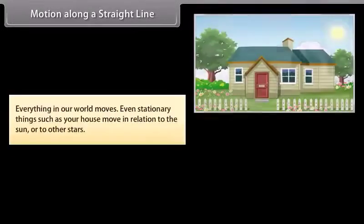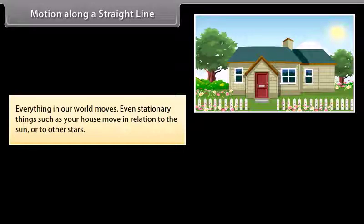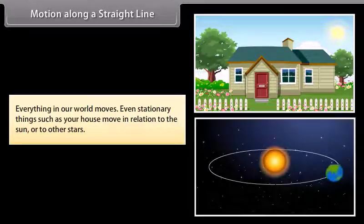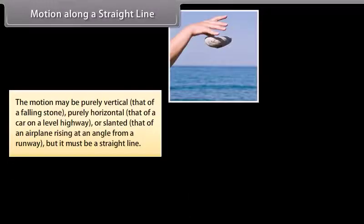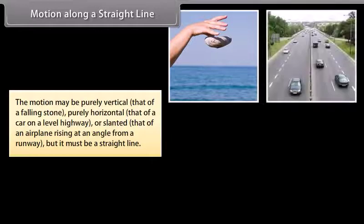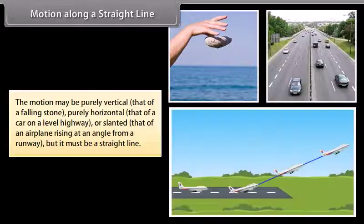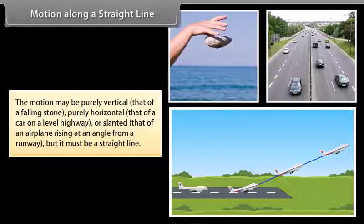Motion along a straight line. Everything in our world moves. Even stationary things such as your house move in relation to the sun or to the other stars. The motion may be purely vertical — that of a falling stone — purely horizontal — that of a car on a level highway — or slanted — that of an airplane rising at an angle from a runway — but it must be a straight line.